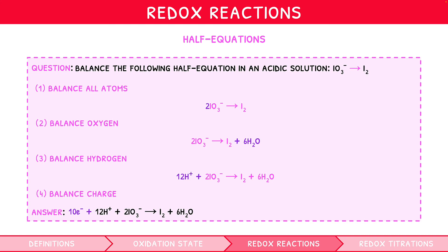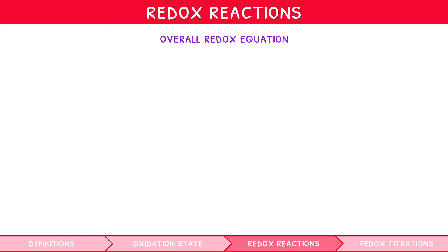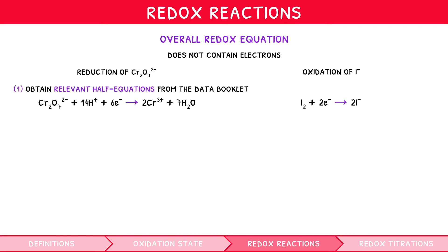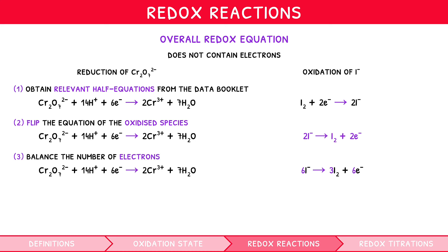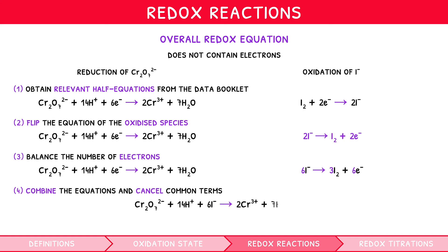Now that you understand how to balance a single half equation, it follows that you would be expected to combine two half equations together to reform the overall redox equation. The key difference is that a redox equation does not contain electrons. The process is a simple four-stage process — let's cover it considering the reduction of Cr₂O₇²⁻ and oxidation of I⁻. First, obtain the relevant half equations from the data booklet for Cr₂O₇²⁻ and I₂. Then flip the equation for the oxidised species. Multiply the I⁻ equation by 3 so that it has 6 electrons and is balanced with Cr₂O₇²⁻. Combine the equations and cancel common terms to give: Cr₂O₇²⁻ + 14H⁺ + 6I⁻ → 2Cr³⁺ + 7H₂O + 3I₂.